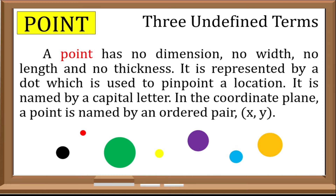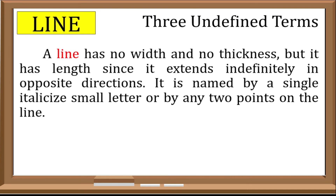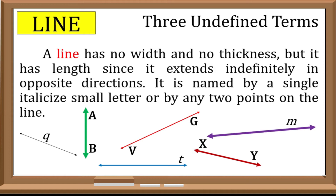Next would be the line. A line has no width and no thickness, but it has length since it extends indefinitely in opposite directions. It is named by a single italicized small letter, or by any two points on the line. These are examples that represent a line.